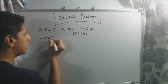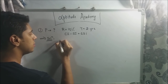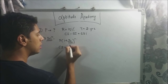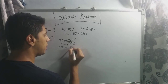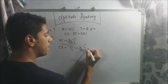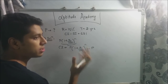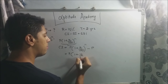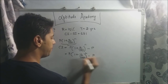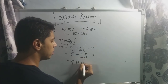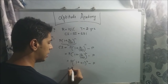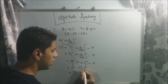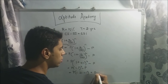The formula for the amount when a bank uses CI is P into (1 + R/100) raised to N. CI will be this entire amount — P into (1 + R/100)^N — minus the initial amount. Substituting: P × (1 + 10/100)² − P = P × (1.1)² − P = P × 1.21 − P = 0.21P. So compound interest is 0.21P.